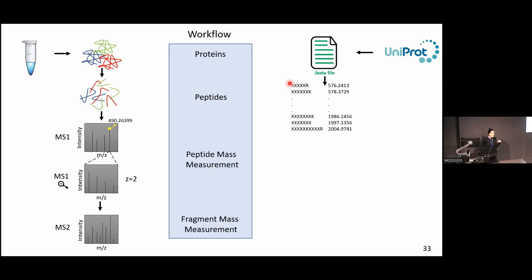All the steps from now on are going to be in silico, but they should be equivalent to the steps we did in the wet lab. For example, I have the list of proteins in the FASTA file and I'm going to digest them into peptides — not arbitrarily, but following the same digestion rules of the enzyme used in the wet lab. So if I used trypsin in my experiment, I do the same in silico digestion: digesting proteins after lysine and arginine.